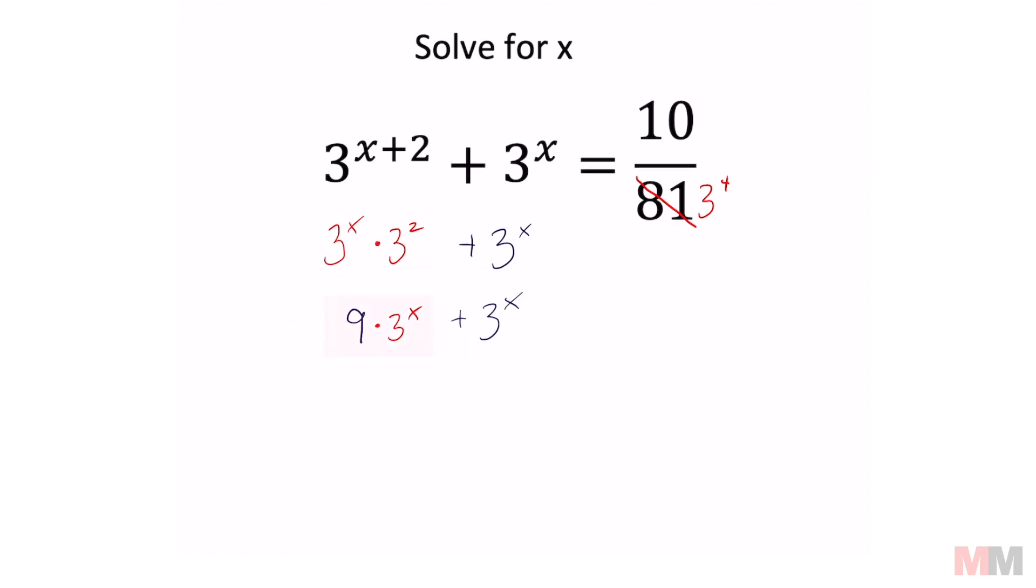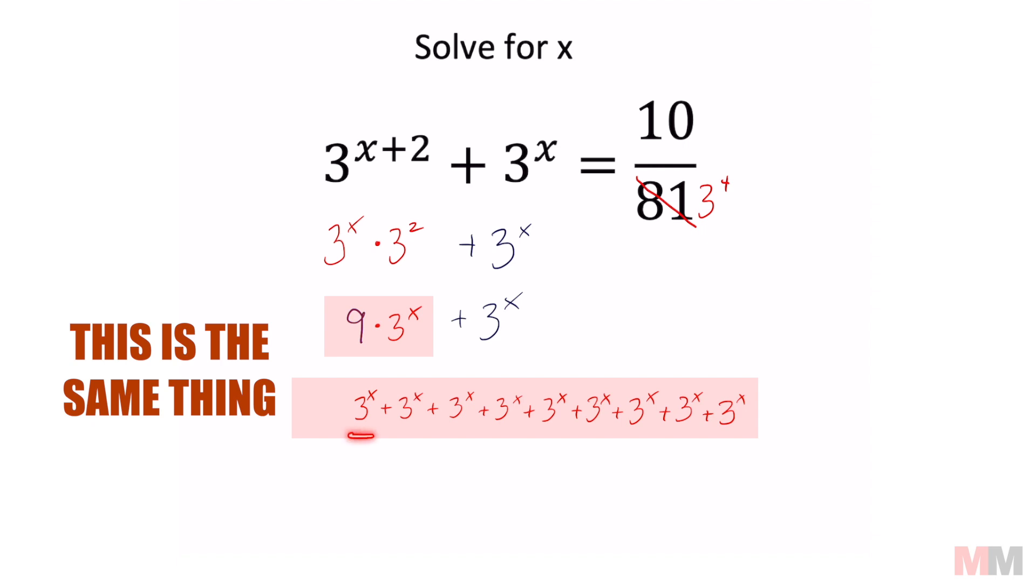Think about it this way. 9 times 3 to the x is the same thing as writing 3 to the x, adding it to itself 9 times. Now I don't expect you to write all of that. I just wanted to show this visually.